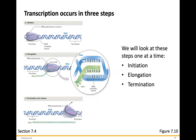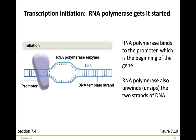The process of transcription occurs in three steps: initiation, elongation, and termination and release. Transcription initiation is when RNA polymerase gets started. RNA polymerase — the enzyme that synthesizes the RNA strand — binds to a promoter region, which is a sequence upstream that the enzyme recognizes. This indicates the beginning of the gene. RNA polymerase also unwinds or unzips the two strands of DNA.